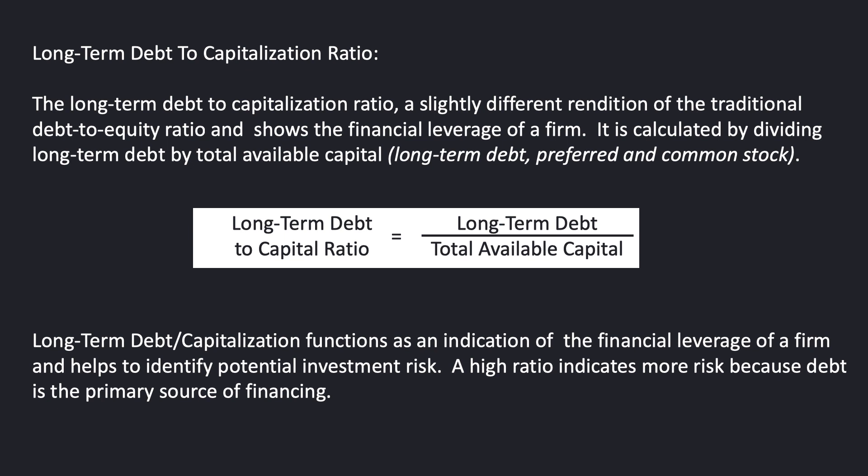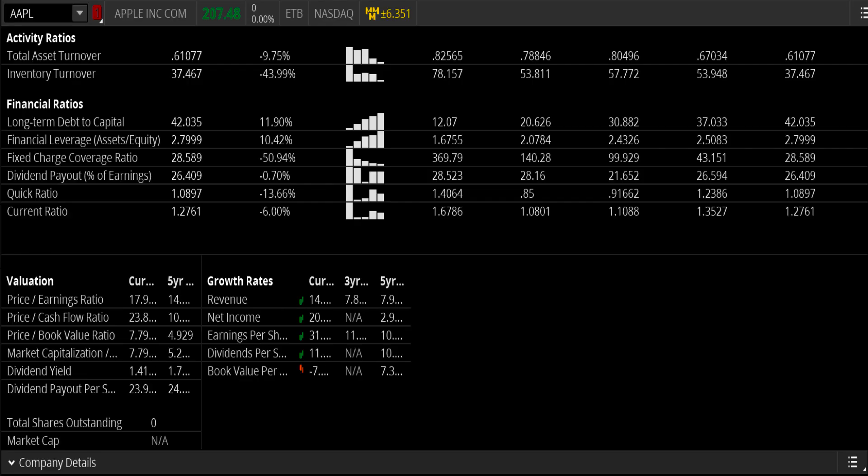The long-term debt to capital ratio functions as an indication of the financial leverage of a firm, and it helps us to identify potential investment risk. A high ratio indicates more risk because debt is the primary source of financing.